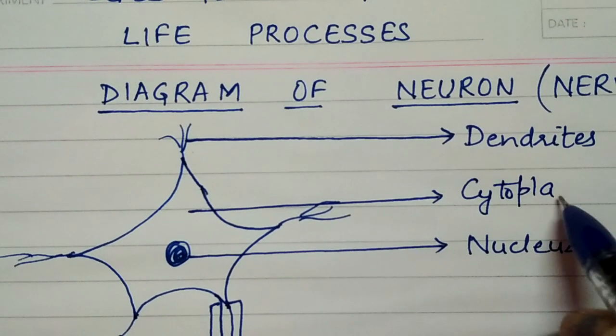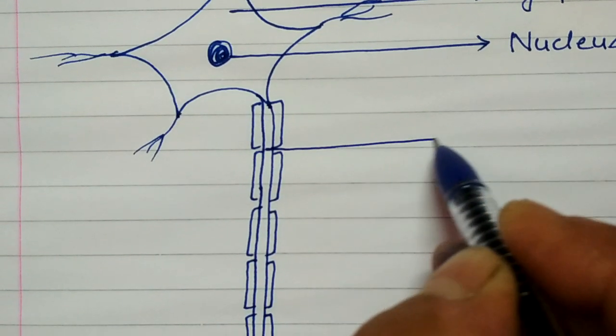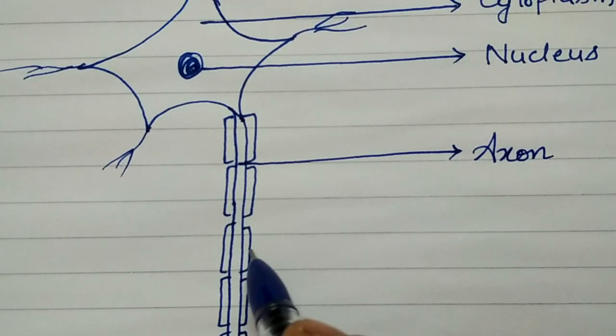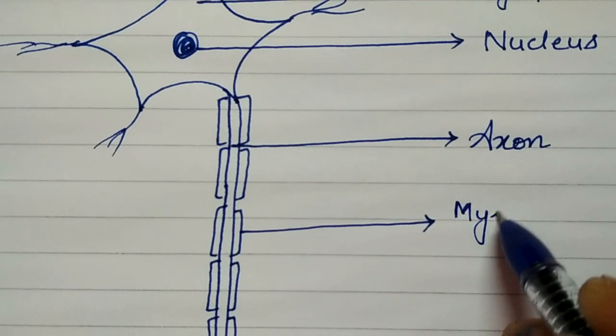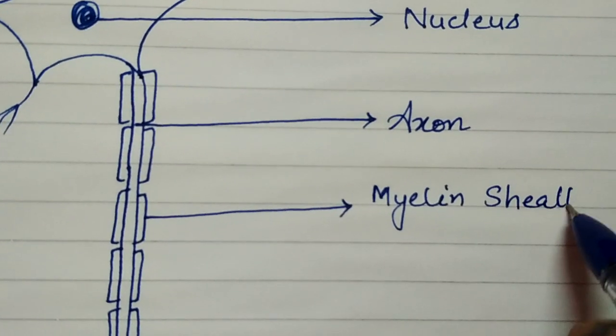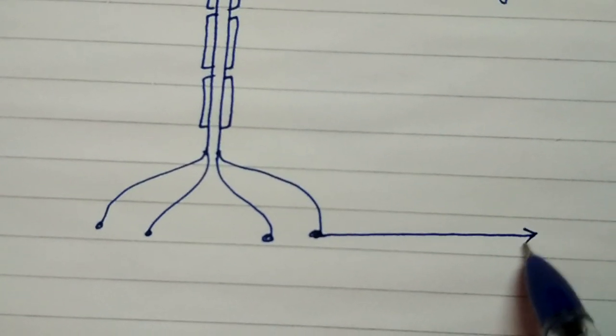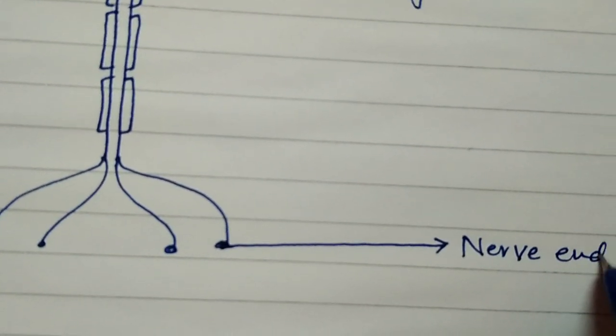Now the central one is the axon and what are these, myelin sheath, and the last one we call them as nerve endings.